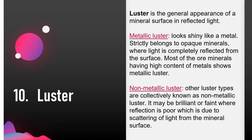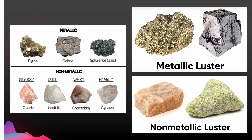Luster is the general appearance of a mineral surface in reflected light. There are two general types of luster — metallic luster and non-metallic luster. Metallic luster looks shiny like a metal and strictly belongs to opaque minerals where light is completely reflected from the surface. Most ore minerals with a high content of metals show metallic luster. All other types of luster are collectively known as non-metallic luster — it may be brilliant or faint where reflection is poor, due to scattering of light from the mineral surface. Non-metallic lusters are referred to as glassy or vitreous, dull, clay-like, waxy, pearly, silky, resinous and many others.